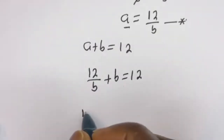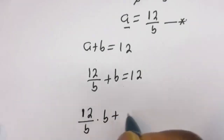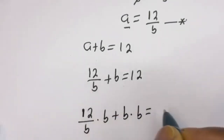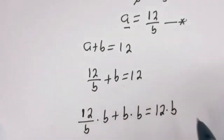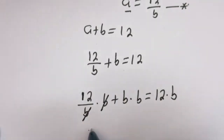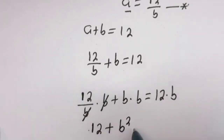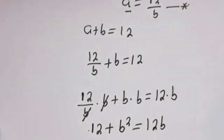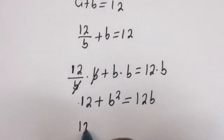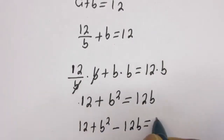Let's multiply all through by b. 12 divided by b, times b, plus b times b, is equal to 12 times b. The b's cancel, so we have 12 plus b squared equals 12b.